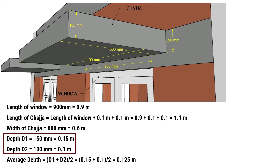It should be noted that the chhaja is cast as a sloped structure to facilitate the efficient drainage of rainwater, resulting in varying depths of the chhaja. The front face has a smaller depth than the back end. In our case, the smaller depth is specified as 0.1 meters while the larger depth is 0.15 meters.